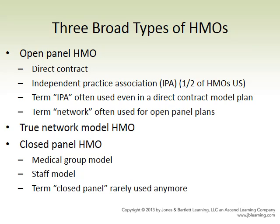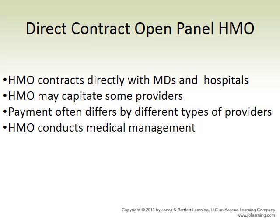A closed panel HMO is very strong. It can be a medical group — a whole bunch of doctors that HMO participants must go to. It can be a staff model where providers are employed by the HMO directly. In a direct open panel model, the HMO contracts directly with doctors and hospitals. The HMO may capitate some providers — paying them a monthly fee regardless of whether they see patients or how much they do. The HMO will be involved in medical management in a whole host of ways.